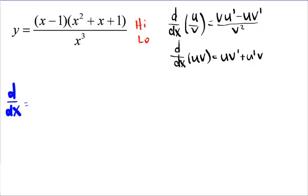Alright, so d dx, d dx, and we're going to take the low x cubed d high. And that's going to be the first times the derivative of the second plus the derivative of the first times the second.